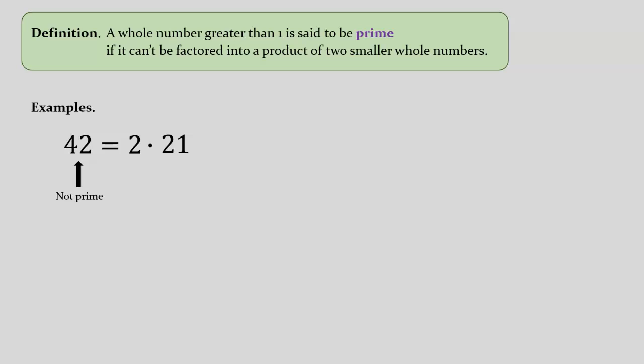But suppose we were to turn our attention to that first factor on the right-hand side, 2. Can we rewrite 2 as a product of two smaller whole numbers? Obviously not. The only whole number smaller than 2 is 1, and 1 times 1 certainly isn't 2. Thus 2 is a prime number, and I'll acknowledge this by painting it purple.